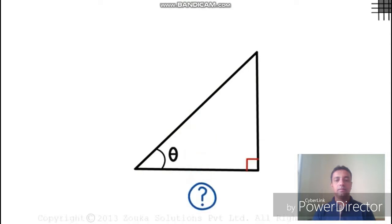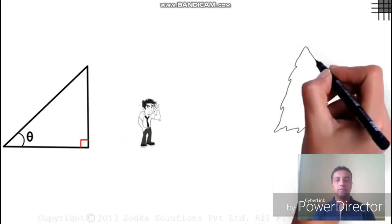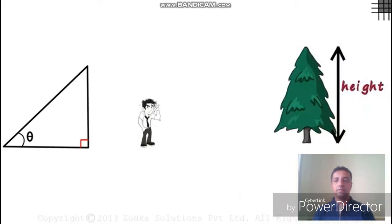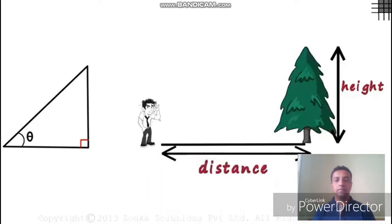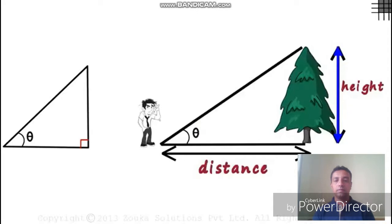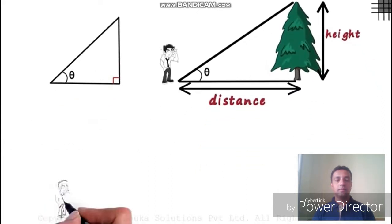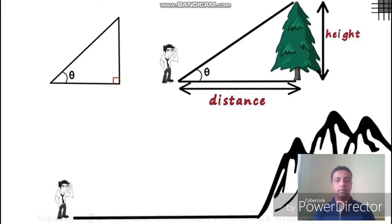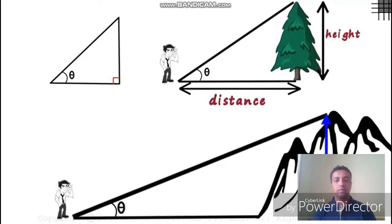But when would these kinds of triangles help us in real life? Let's say Zen wants to find the height of a tree. One way is to make an approximate guess, but a better way is by using trigonometry. It is always easier to find the distance on the ground than finding the distance vertically. With the ground distance and the angle theta known, Zen can find the height of the tree. Similarly, if the distance and angle to a mountain are known, the height can easily be found.